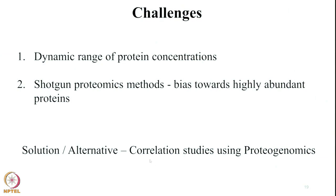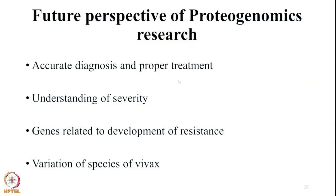An alternative approach is to go for correlation studies using proteogenomics, by which one can also include low-abundant proteins and genes which have variations related to particular proteins. The future perspectives of proteogenomics research include accurate diagnosis and proper treatment, understanding the severity of Plasmodium vivax, studying genes related to development of resistance using proteogenomic analysis, and investigating variations of vivax species — as India itself contains the maximum variations of Plasmodium vivax compared to the rest of the world. We need to understand these variations as much as possible to treat patients in India effectively. With this, I would like to end the lecture. Thank you.